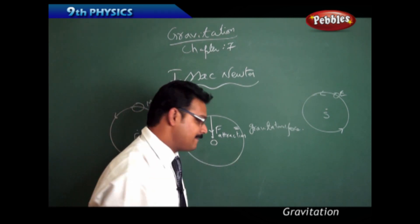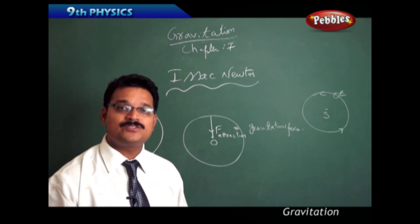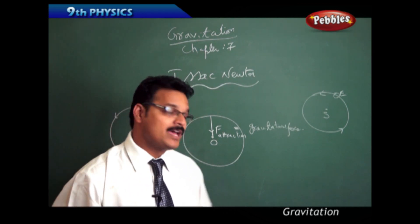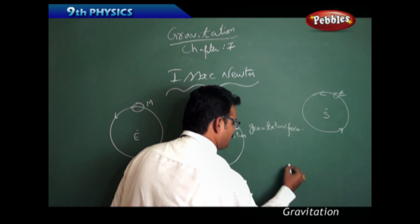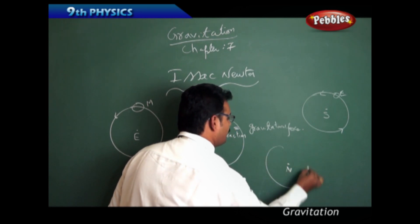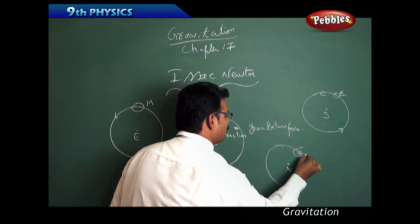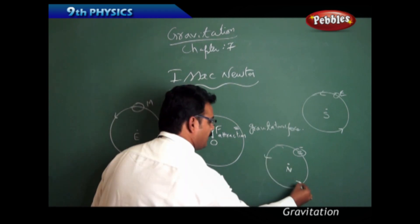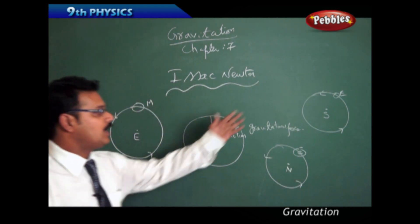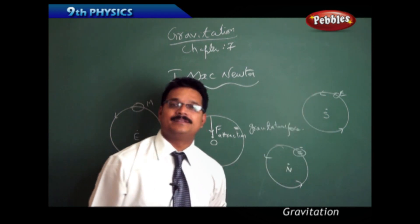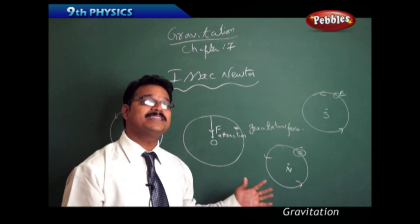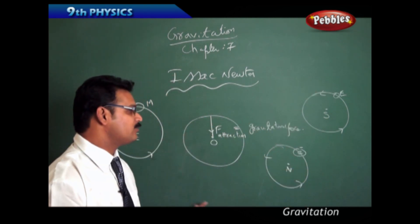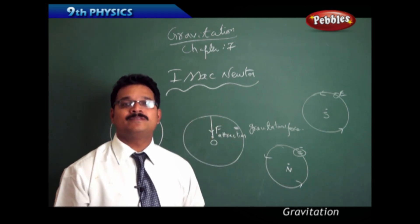Inside the atoms, we have electrons and nucleus, and these electrons revolve around the nucleus, like how the moon revolves around the earth, how the earth moves around the sun. What are the factors making all these bodies rotate around another massive body?